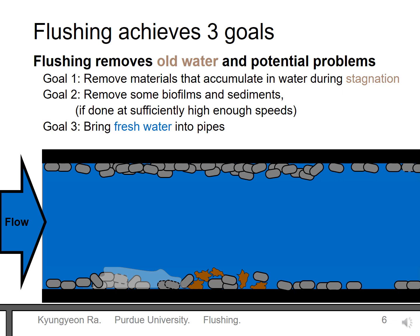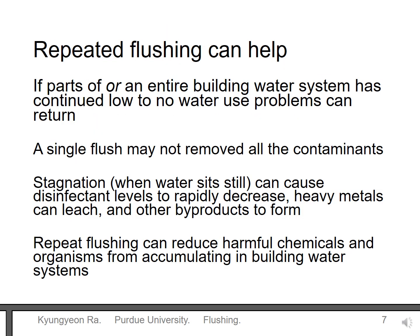The third goal of flushing is to bring fresh water into pipes. This fresh water should have lower amounts of bacteria, lower amounts of food for bacteria, and a disinfectant chemical. Now you have a better idea of how flushing could help improve building water quality.